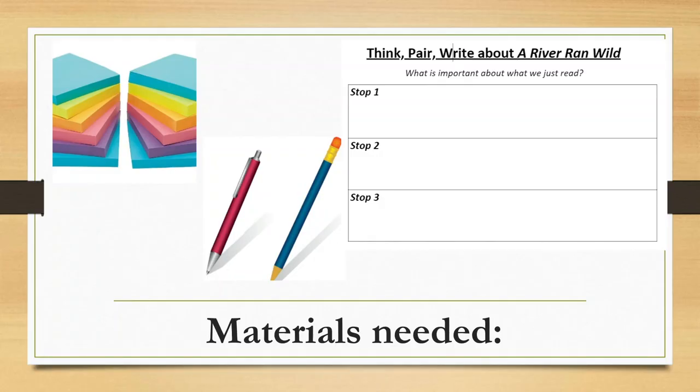The materials you're going to need for this lesson are some sticky notes — and if you don't have sticky notes, it's totally fine, you can just cut up a piece of paper into little squares. You'll also need a pen or a pencil and a piece of paper that you can divide into three sections for the three stops we're going to take while we read.